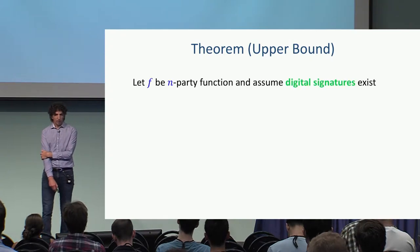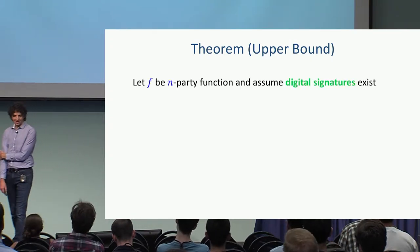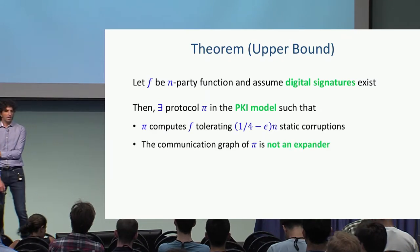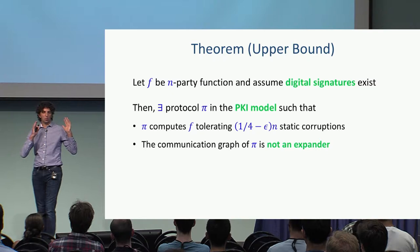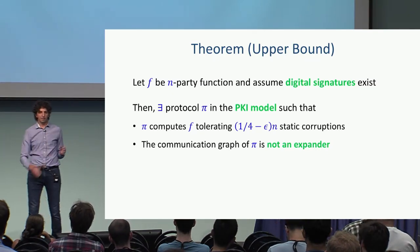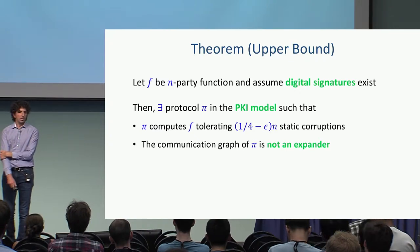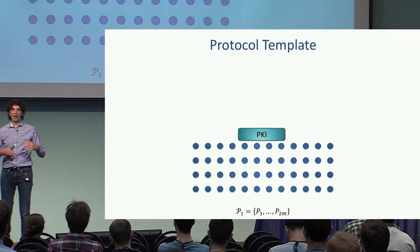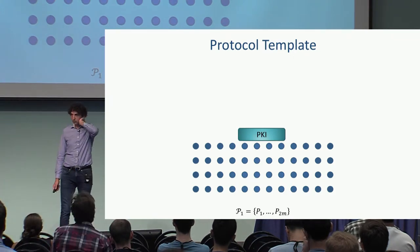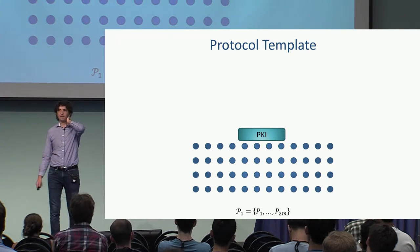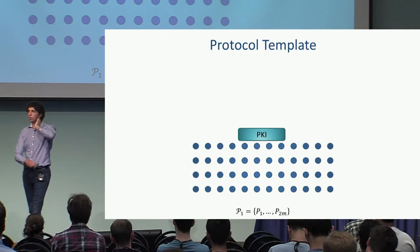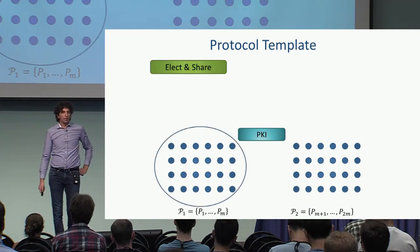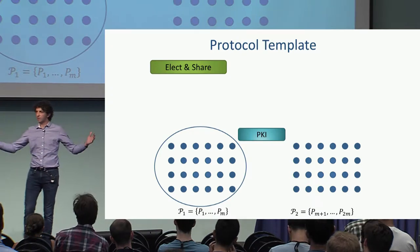Assuming digital signatures and a secure function evaluation protocol in the PKI model that can tolerate a quarter-minus-epsilon fraction of static corruptions for any arbitrarily small positive epsilon, the communication graph of this protocol is not an expander. The high-level protocol is as follows. Assume an even number of parties — 2m parties. We split the party set into two linear-sized sets: p1 to pm and pm+1 to p2m.